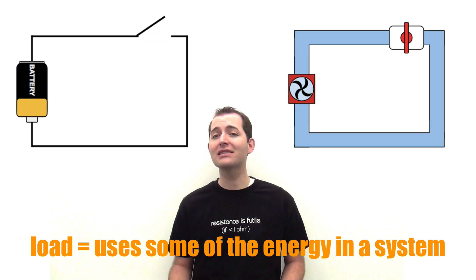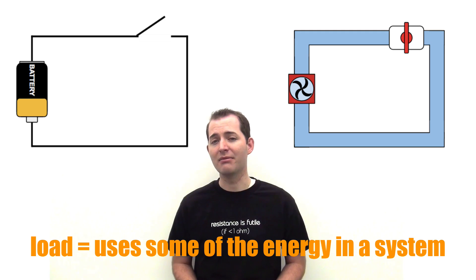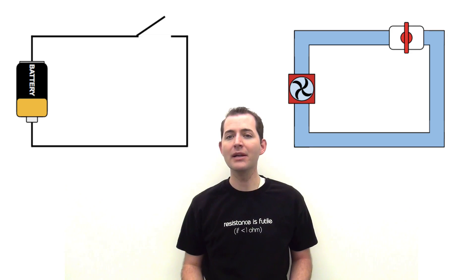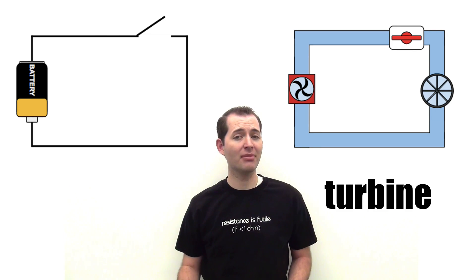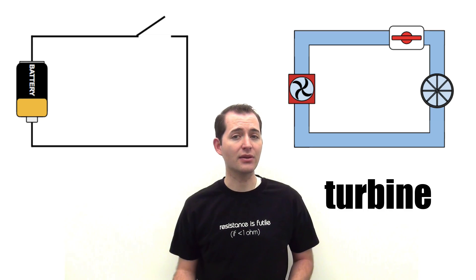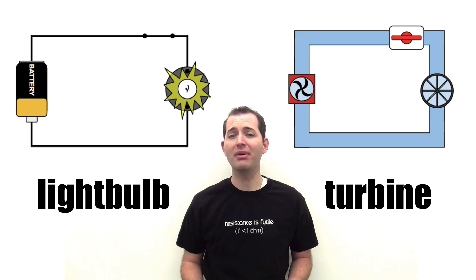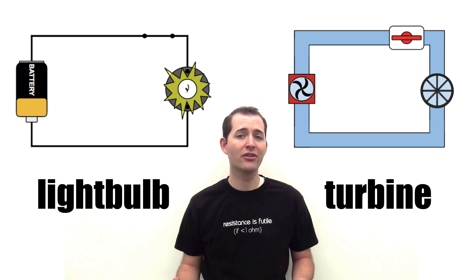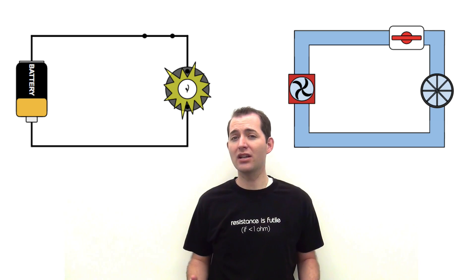In both situations we can also have something known as a load. This is a device or an object that's going to be using some of the energy in the flow of whatever is in our system. In the case of our water system, we may have something like a turbine, which is powered by the flow of water through the pipes. In the case of our electrical circuit, we might have a light bulb, which is also powered by the flow of electricity through the wires.